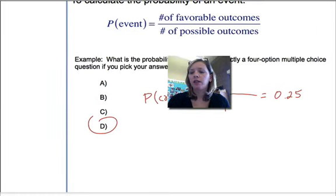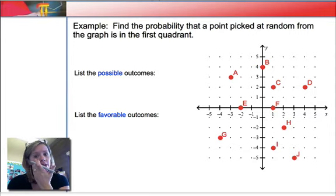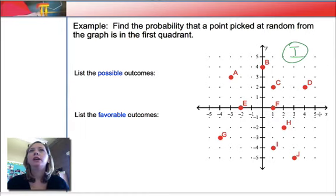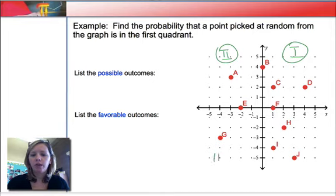Alright, great. So let's do another one. Here is a more geometry-related probability problem. Find the probability that a point picked at random from this graph is in the first quadrant. So let's do a little review of our quadrants. The first quadrant is the positive-positive quadrant, so it's up here. So that's quadrant 1. And then we go in a counterclockwise fashion to name the rest of them. So quadrant 2 is over here. Quadrant 3 is down here. And then quadrant 4 is over in the bottom right. So there's our quadrants.